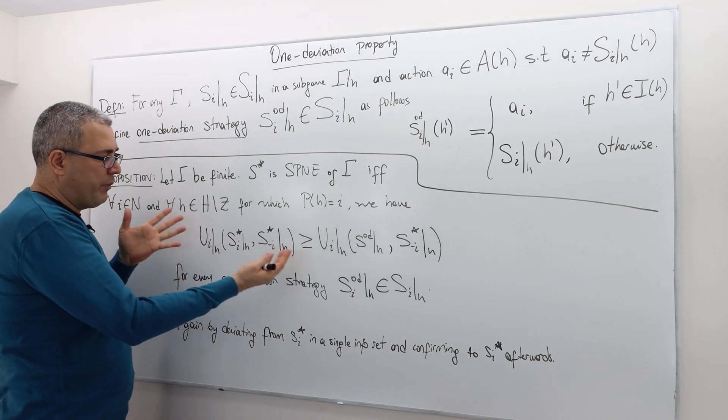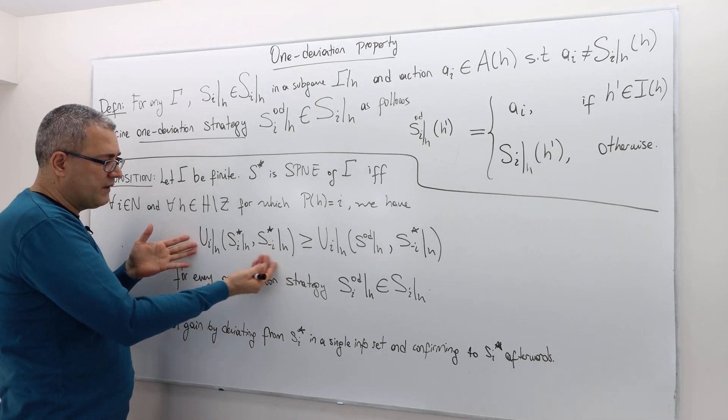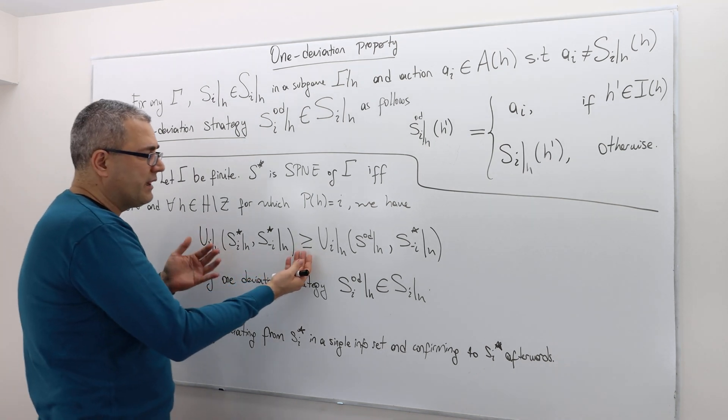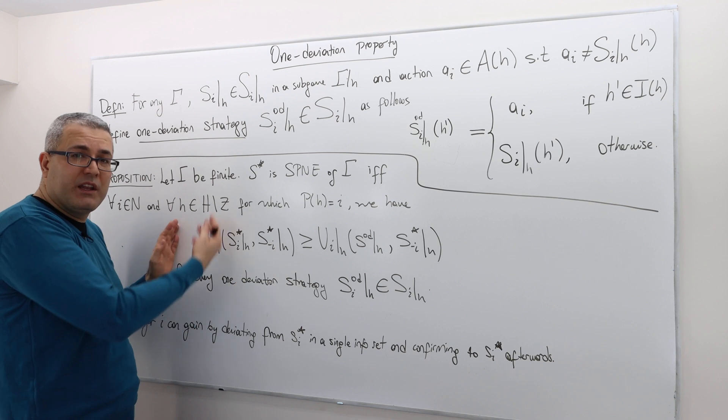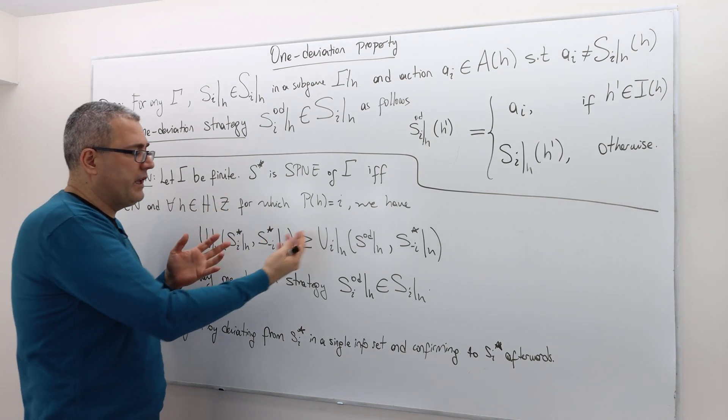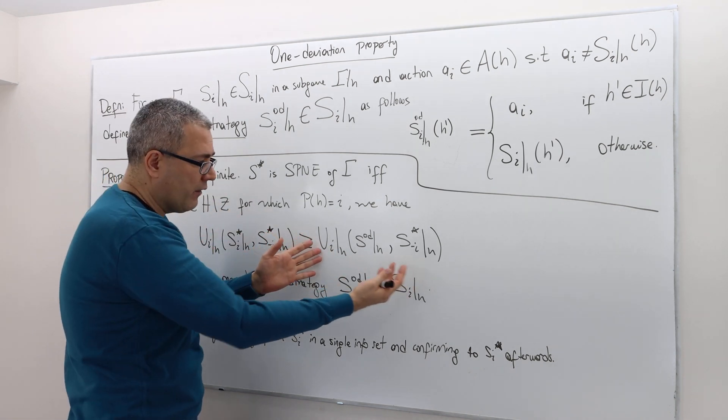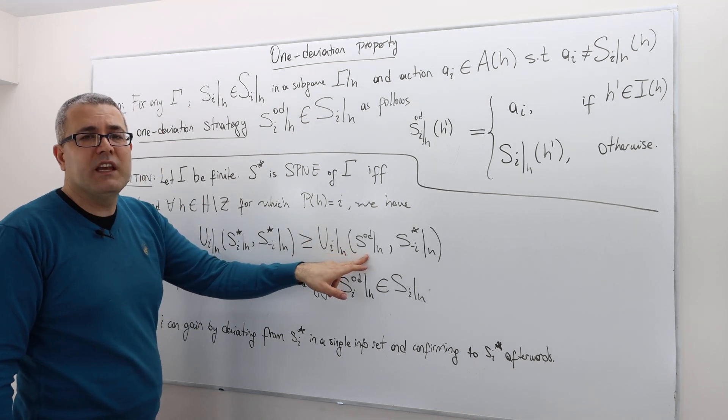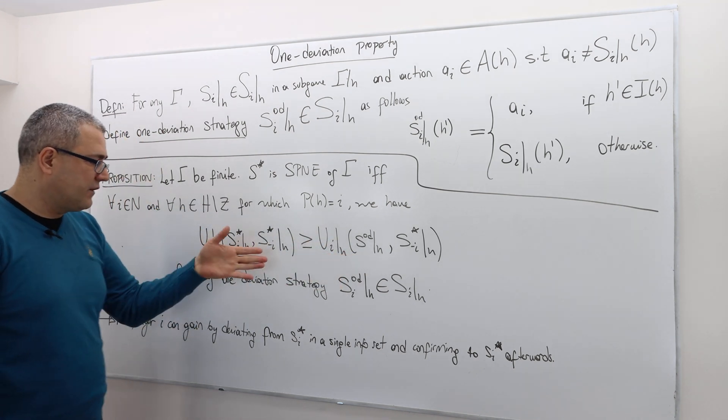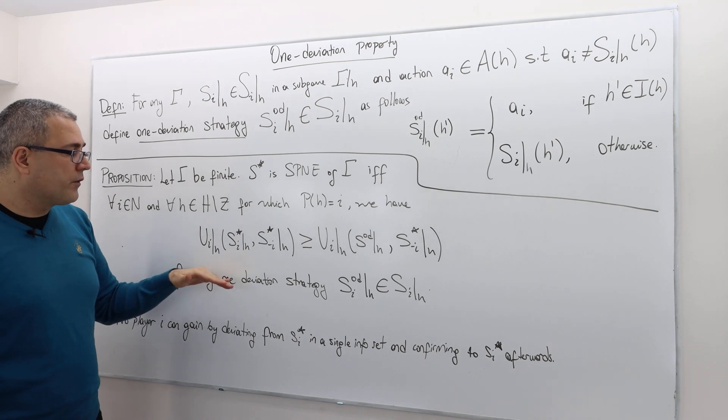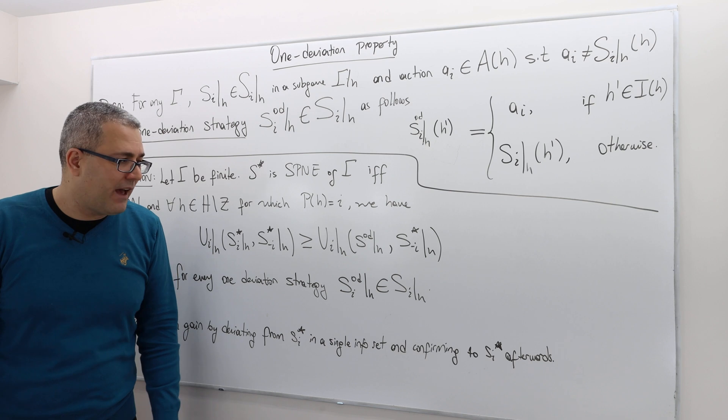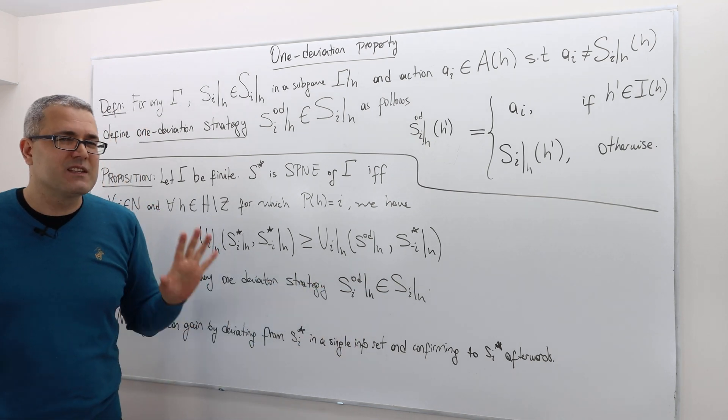Player I's payoff when he plays his strategy SI star should be at least as high as his continuation payoff if he instead plays one deviation strategies. And so this must be true for every one deviation strategy player I may have after history H.